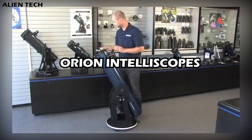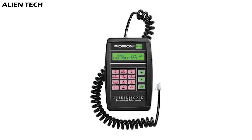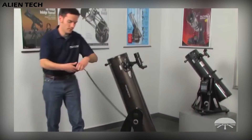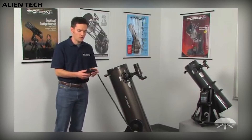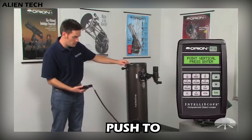To solve this, Orion introduced the IntelliScope series of telescopes. The Orion IntelliScope is a computerized object locator unit designed to complement the Orion SkyQuest XT IntelliScope series of Dobsonian telescopes. The IntelliScope unit has an information base of 14,000 objects, which include nebulae, galaxies, star clusters, double stars, planets, and more.